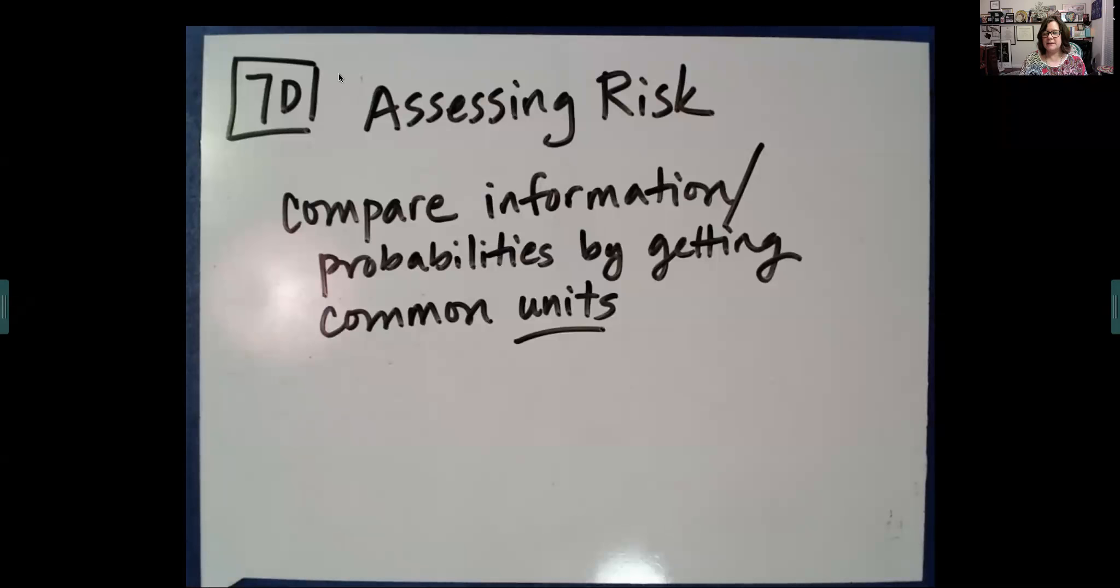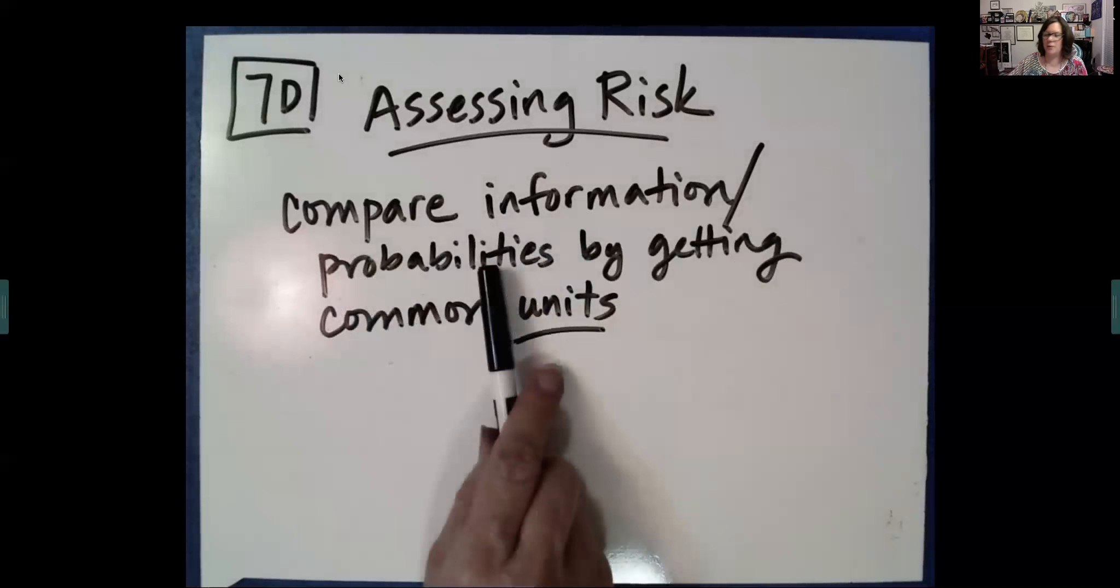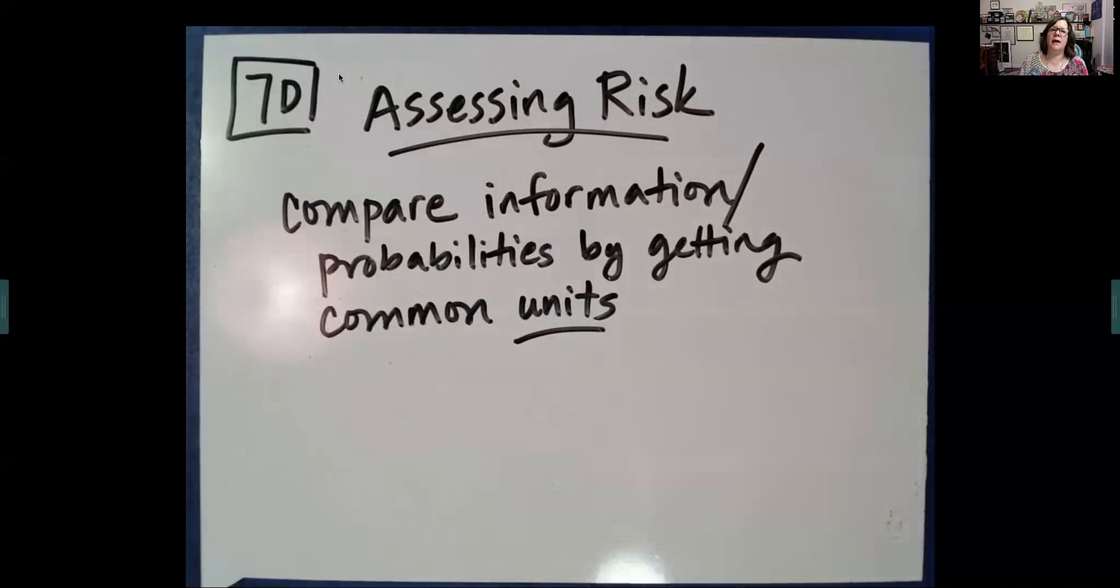Okay. We didn't actually get any formulas in this section. The title was Assessing Risk. And the idea was that when we make choices about what we should do, like right now, governors are making choices about whether we should continue our shelter in place policies or not. So, we use the data to help us make decisions like this. And to understand the data, to compare information or probabilities, we do that by getting common and useful units. So, when we're looking at, for example, this COVID-19 situation, looking just at the number of deaths doesn't give us the whole story. We want maybe deaths per 100,000 people. So, it's really a manipulation of the units to help us understand the numbers in order to make informed decisions.